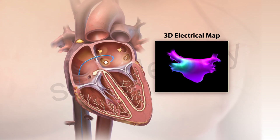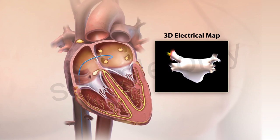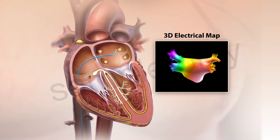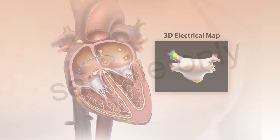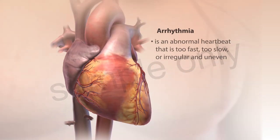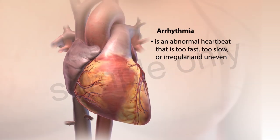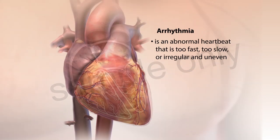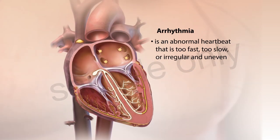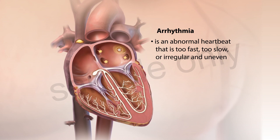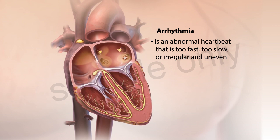Electrical mapping of the heart is a procedure that is used to diagnose the origins of arrhythmias. An arrhythmia is an abnormal heartbeat that is too fast, too slow, or irregular and uneven.